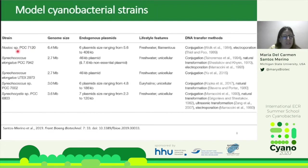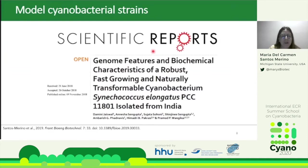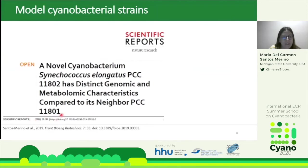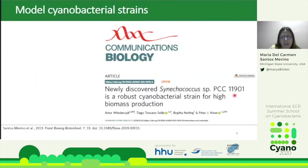The last strain in the list is Nostoc 7120, a filamentous cyanobacterium that could be useful when we need to recover biomass accumulated inside the cell. More cyanobacteria with fast-growing phenotypes have been recently discovered, including Synechococcus elongatus 11801 isolated from India in 2018, a close neighbor presented this year, and strain 11901, recently described for high biomass production.